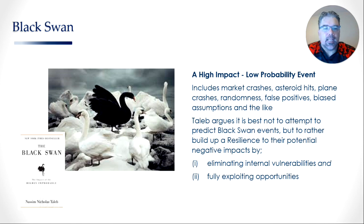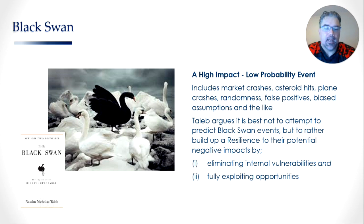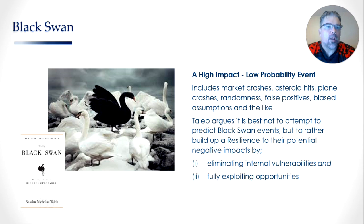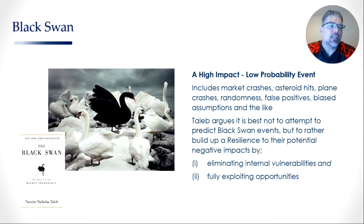Taleb argues in his book that it's best not to attempt to predict black swans because they are essentially highly unpredictable. It's rather better to build resilience to their potential negative impacts by doing two things: actively eliminating internal vulnerabilities, and fully exploiting opportunities when they present themselves. This is the basic concept of a bomb shelter — in World War II, it became almost impossible to determine when, where, or how bombs would be dropped, so cities built shelters that could withstand 99% of known bombs. You just needed a shelter strong enough to withstand the impact.